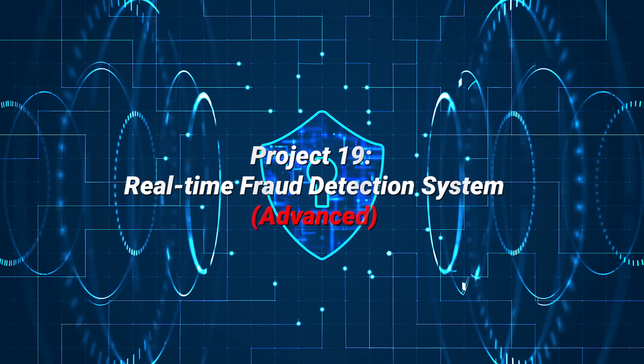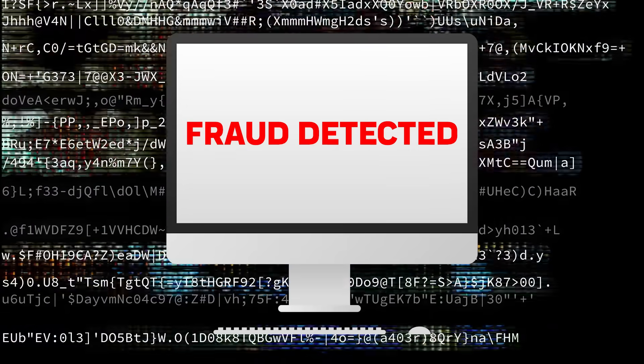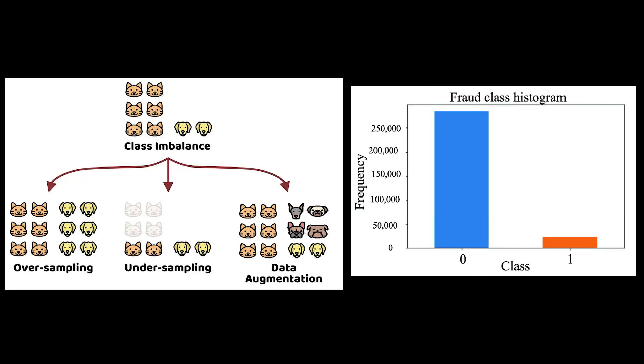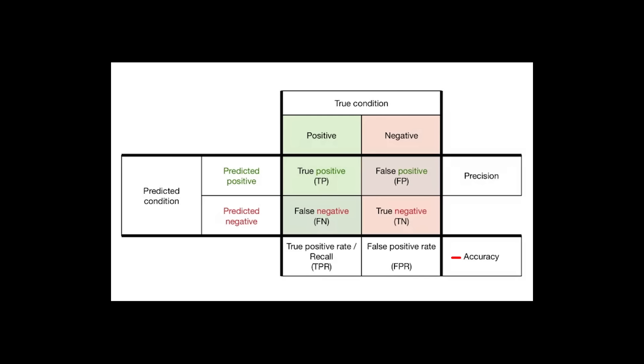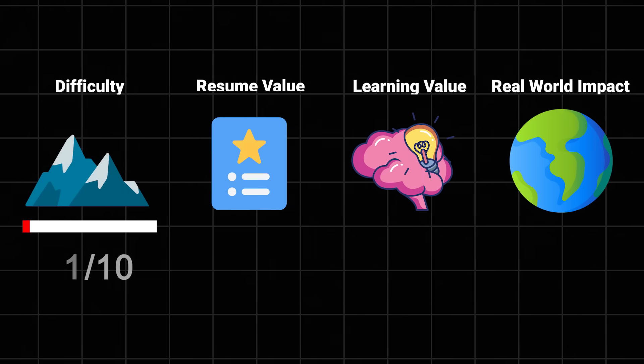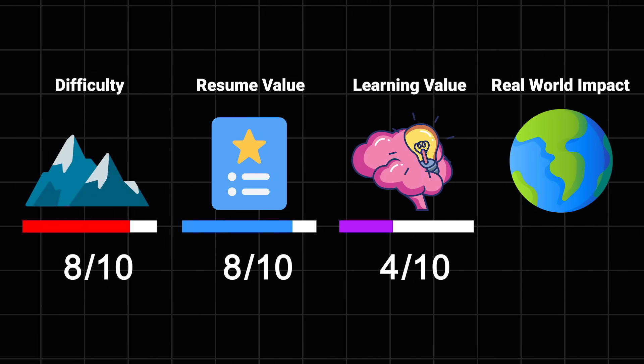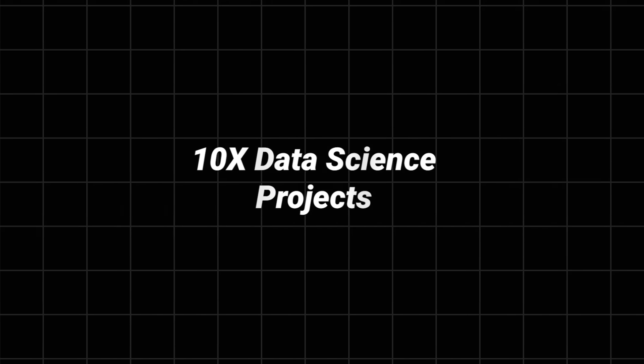Real-time fraud detection system. Here's where we combine fast data processing with machine learning. You'll build a system that can spot suspicious transactions before they happen. It's like being a cyber detective. You'll learn about handling imbalanced data - because thankfully most transactions aren't fraud - feature engineering for financial data, and why accuracy is a terrible metric for fraud detection. Difficulty: 8 out of 10. Resume value: 9 out of 10. Learning value: 9 out of 10. Impact: 10 out of 10.